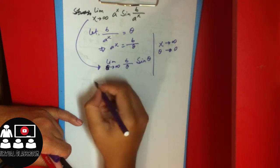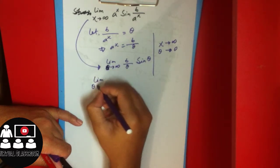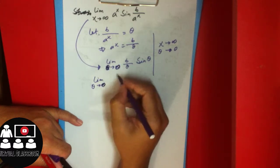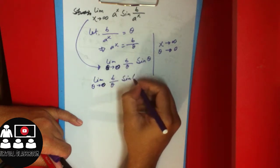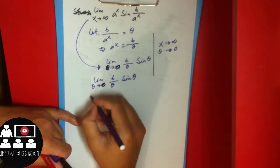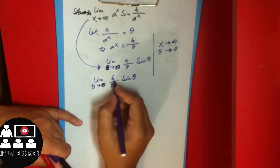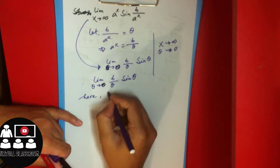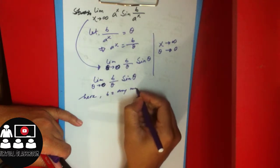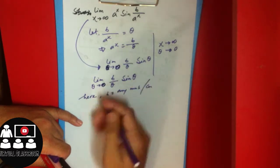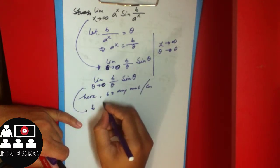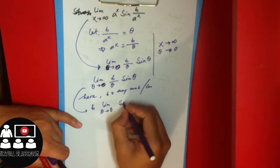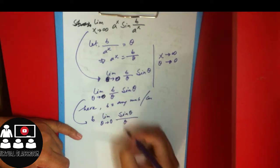As theta approaches zero, we get theta approaches zero by theta times sine(theta). The limit becomes b into the limit as theta approaches 0 of sine(theta) divided by theta. Any constant like b comes outside the limit.